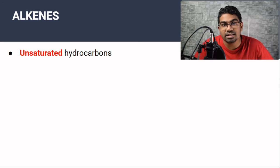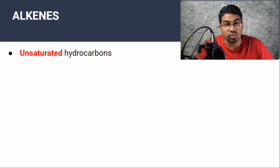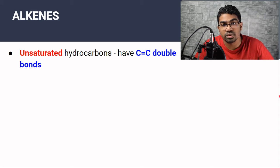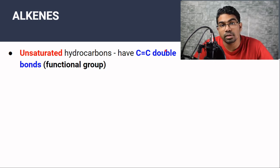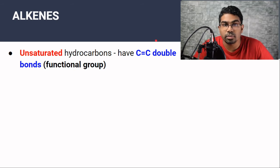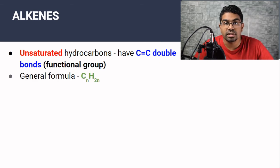Alkenes are known as unsaturated hydrocarbons because they do have carbon-carbon double bonds. This carbon-carbon double bond is known as a functional group — a functional group is what defines a compound. If a compound has a carbon-carbon double bond and no other functional groups, it is an alkene. The general formula for alkenes is CnH2n.